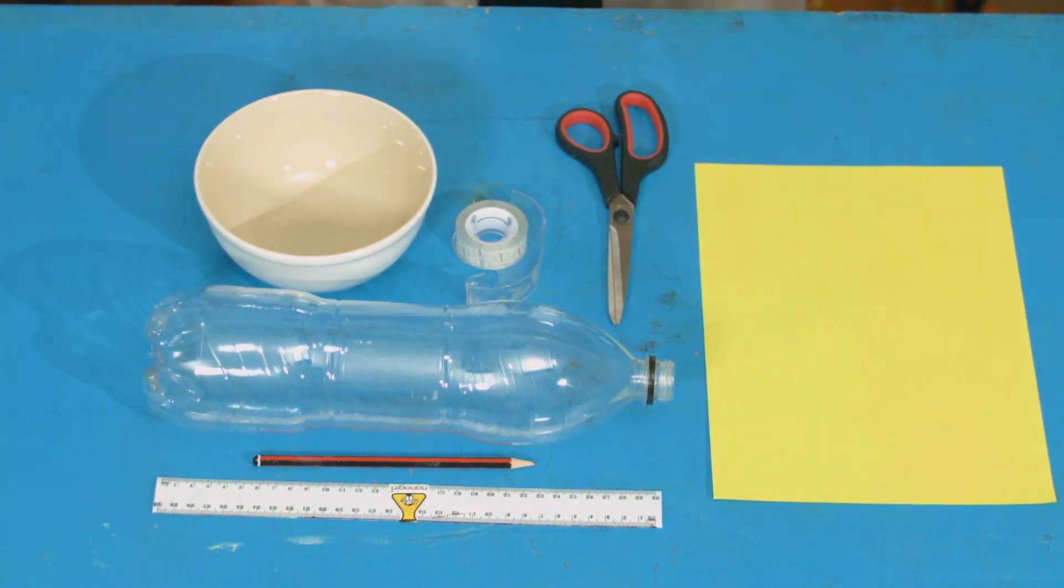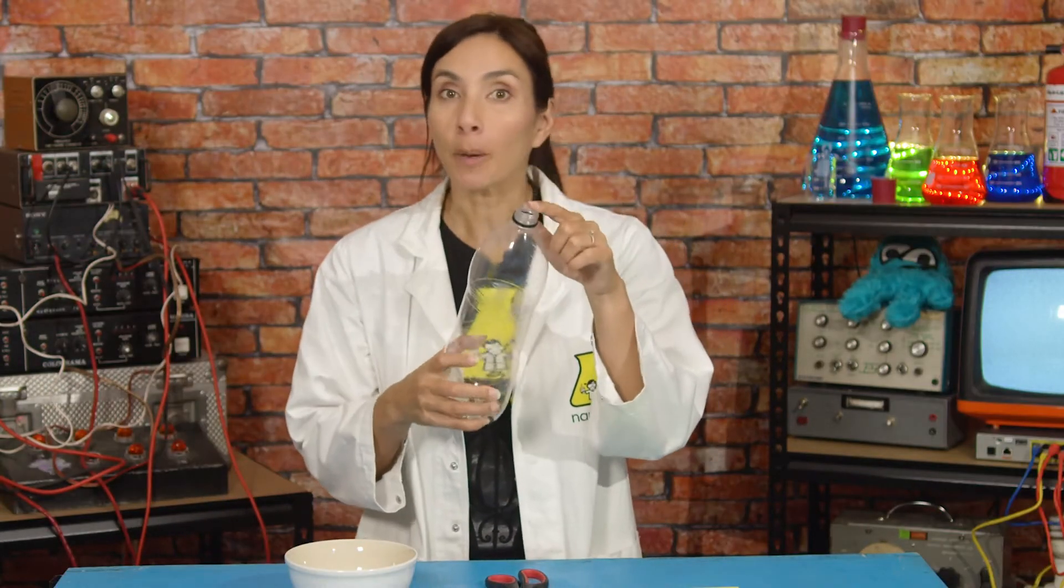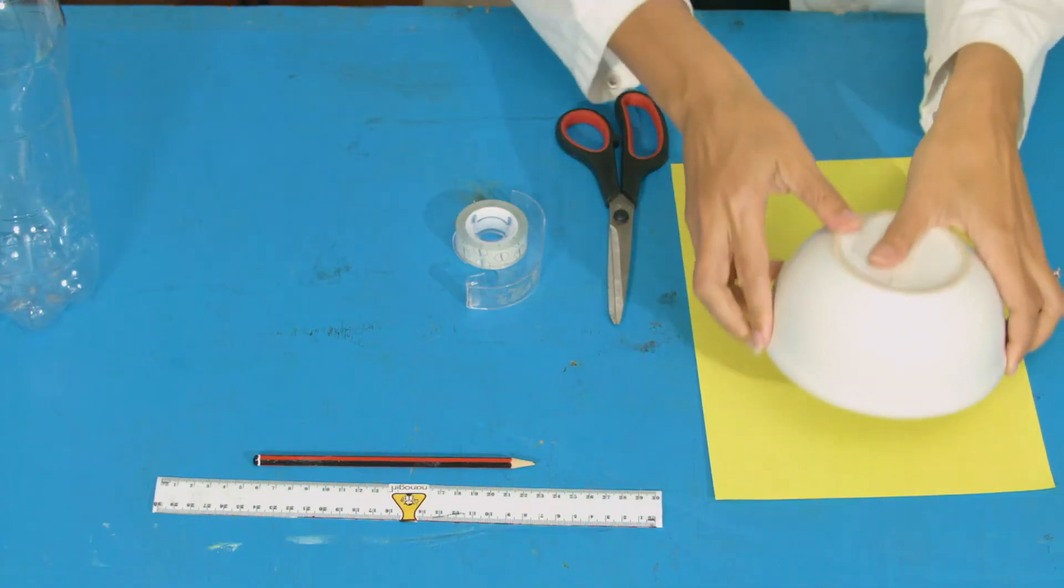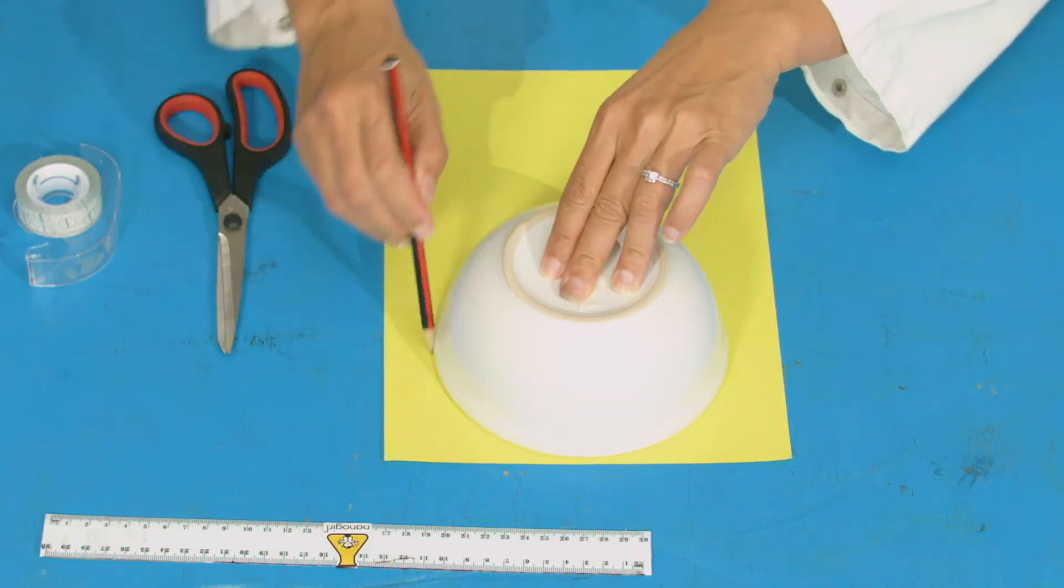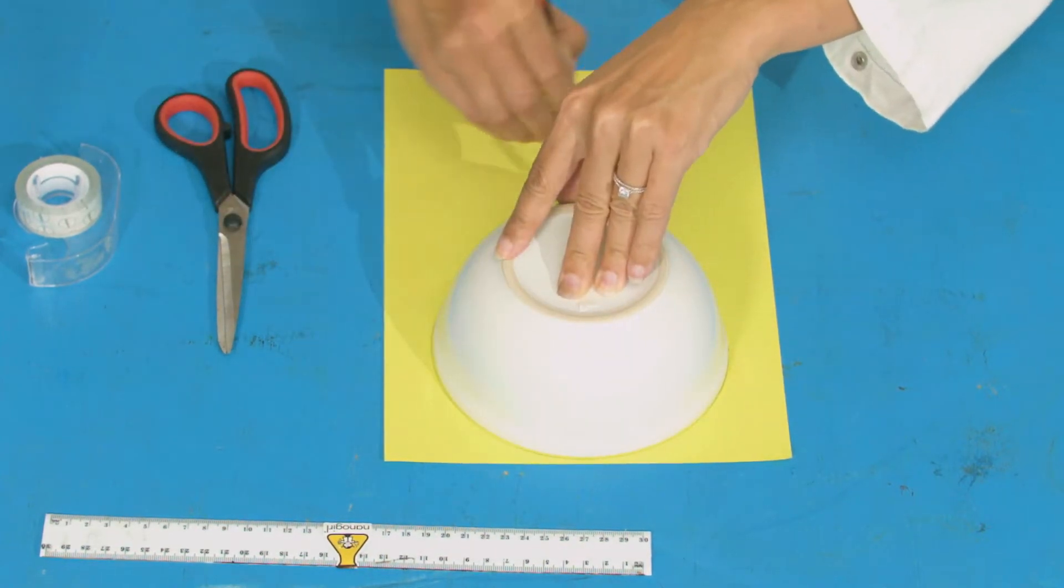You're going to take your bottle and make sure you take the top off. Then take your paper and draw using the bowl a circle around it. Try and keep your circle all the way at the top of the paper because you will need the other part of the paper for something else.